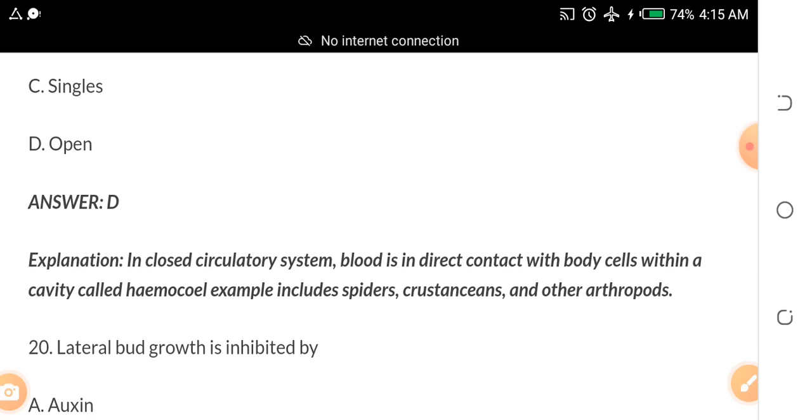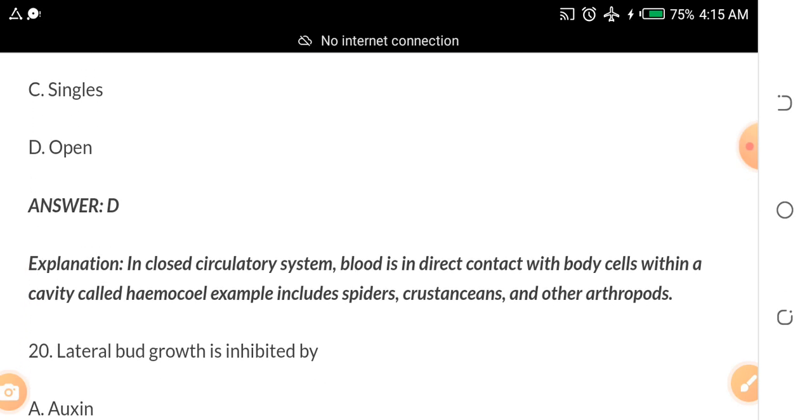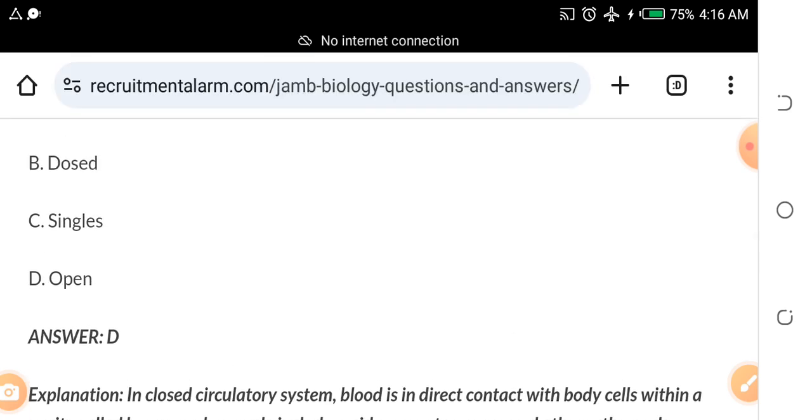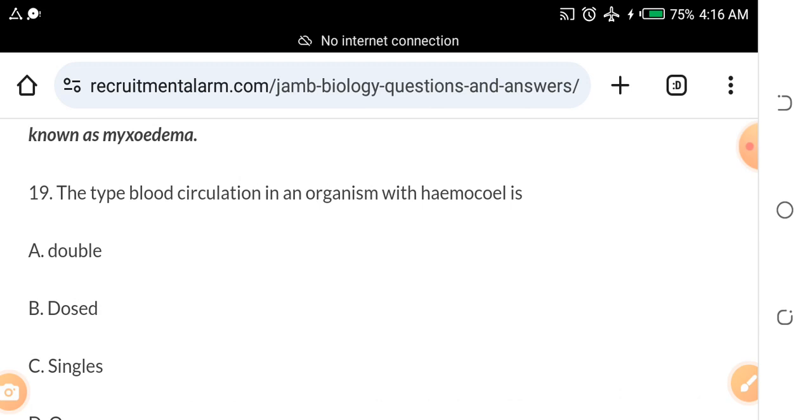In a closed circulation system, blood is in direct contact with body cells within a cavity called hemocoel. Examples include animals like spiders, crustaceans and other arthropods. So the answer actually should be closed circulation. There is a mistake in the typing.